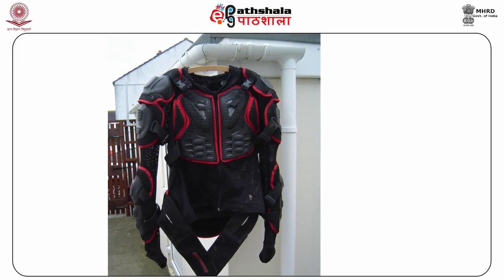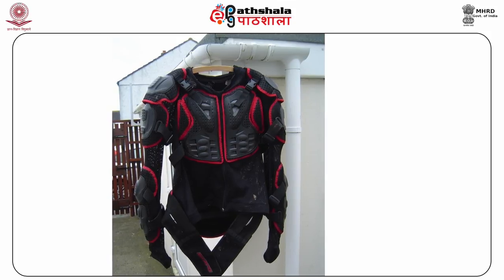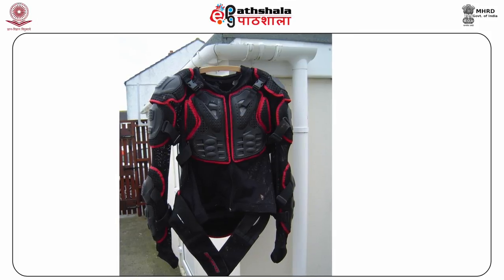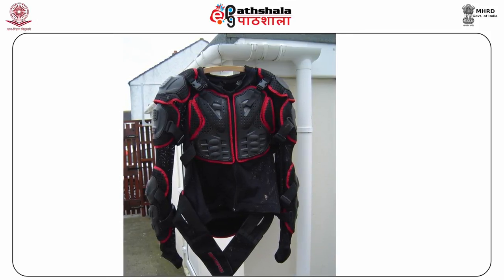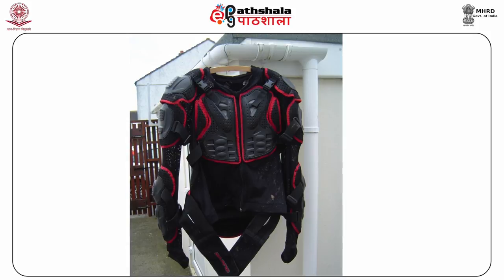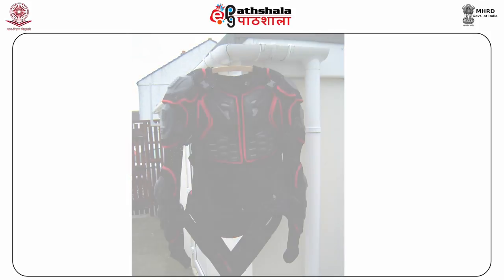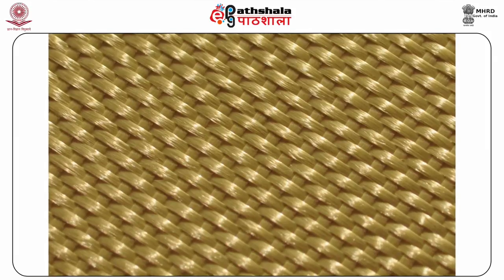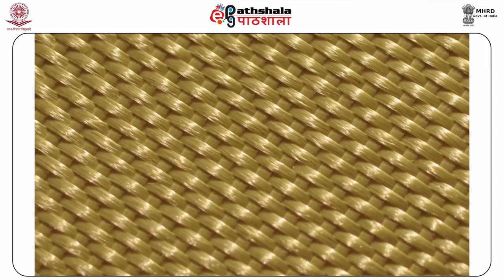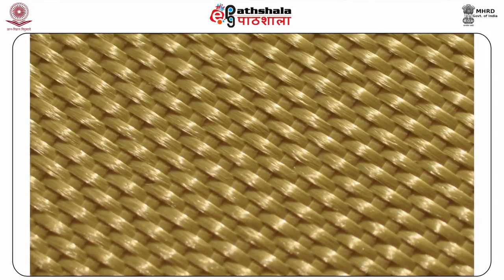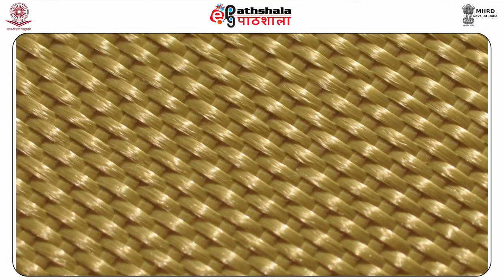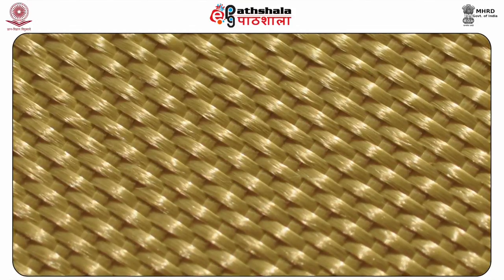The best known aramid fiber is Kevlar, which was originally used in fabric-braced radial tires. It was soon realized that it could be woven into a fabric strong enough to be used in bullet-resistant soft body armor. The Kevlar fibers were simply woven into sheets with varying thicknesses of yarn and density of weave — called denier — to provide the particular properties required. The sheets were assembled into ballistic panels which were permanently sewn into a carrier in the form of a vest.